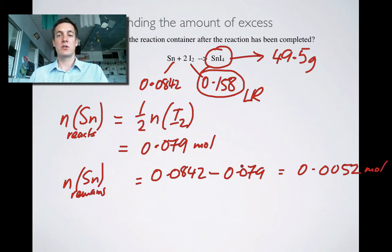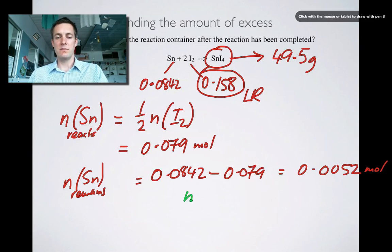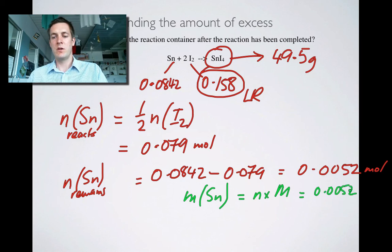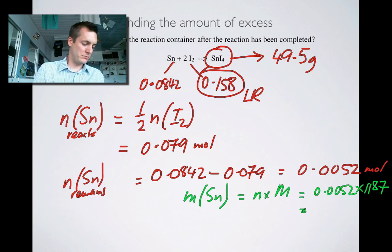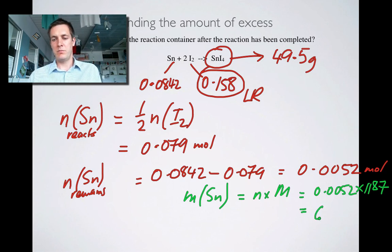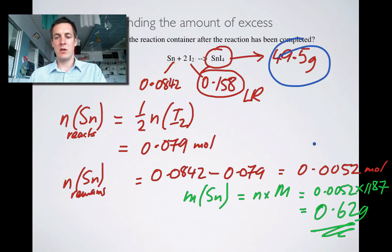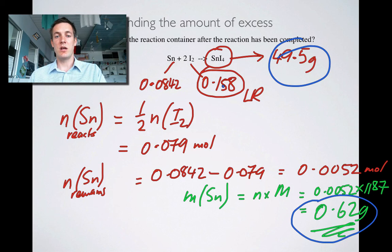Okay? And if we're just going to be consistent and stick with masses, then we can find the mass of tin, and we can say that that is the number of moles times its molar mass, which equals 0.0052 multiplied by its molar mass, 118.7. What's that? 0.0052. And that's 0.62 grams of tin. So in the container, by the time the reaction is finished, we've actually got the product, we've got some leftover tin, because that was our excess reagent, and we've got no iodine left, because that all got used up, because it was the limiting reagent.